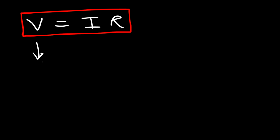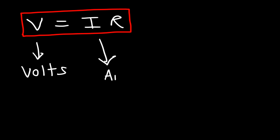Voltage is measured in the units volts. I, which represents the current, is measured in amps. And R, the resistance, is measured in ohms.